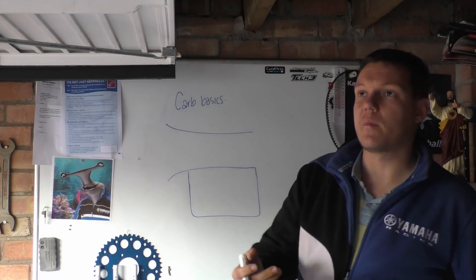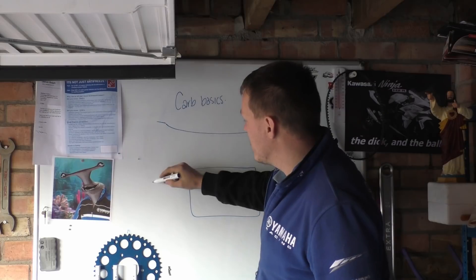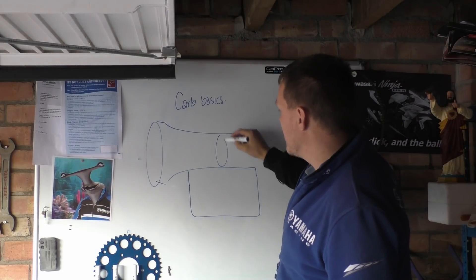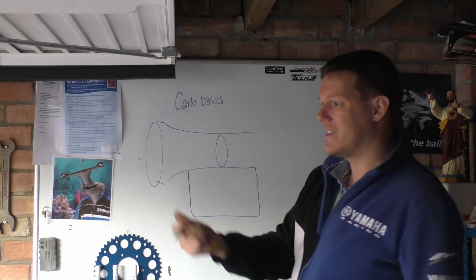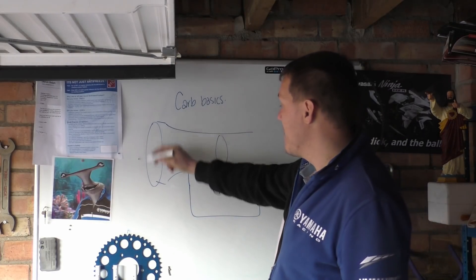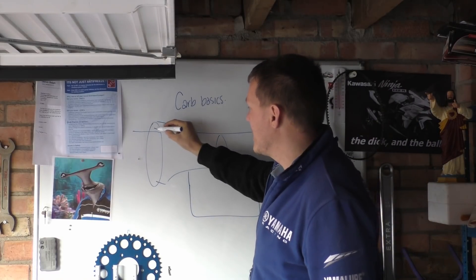Basically we've got a large cross section here, so this is a big hole here. This is a small hole here. This is like putting your thumb on the end and reducing the cross sectional area that the air can pass through.